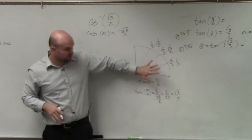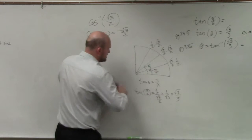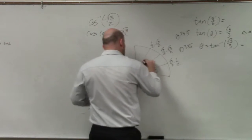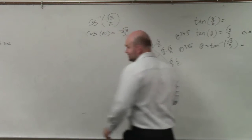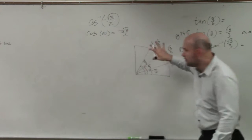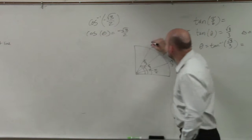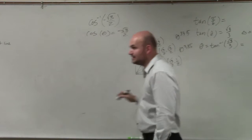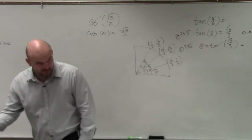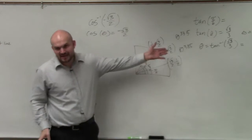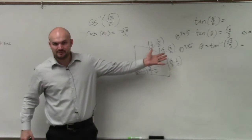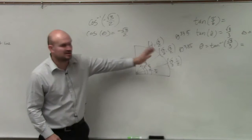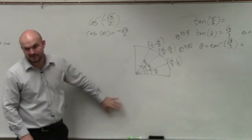So we know the unit circle. We have the first quadrant of the unit circle memorized, because when we take our quiz it's not going to be provided to us. Now remember, the cosine on the unit circle represents the x-coordinates. We don't have any negatives here, but we know that cosine is negative — the x-coordinates are negative in the second and third quadrant.